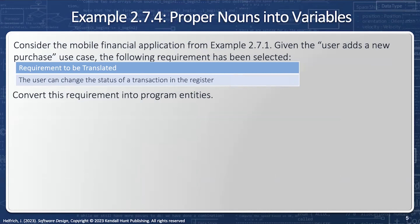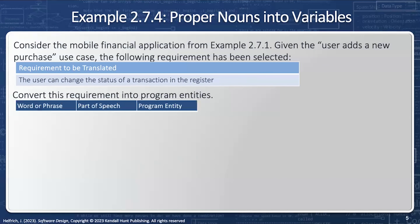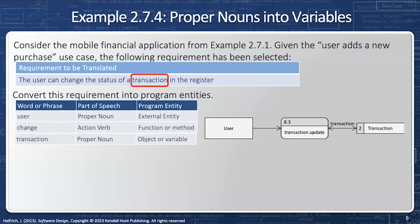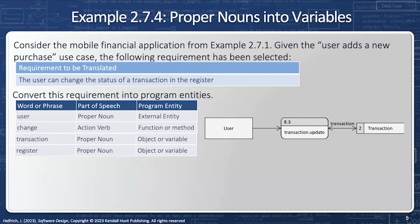Let's take a look at another requirement: the user can change the status of a transaction in the register. 'User' is a proper noun — an external entity, so for a data flow diagram we represent this as an interactor. 'Change' is an action verb — a function, method, or processor in a data flow diagram. 'Transaction' is a proper noun, making it a data store; we get the old transaction, update it, and send the new one, so the arrow goes both ways. The transaction lives inside something called a 'register,' which is also a proper noun and another data store. A transaction doesn't go to the register by itself — there must be an intermediary processor called 'register update' that connects them all together.